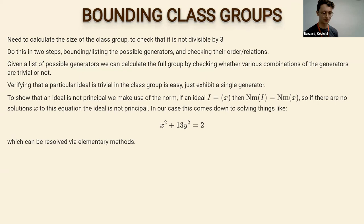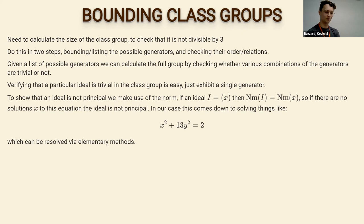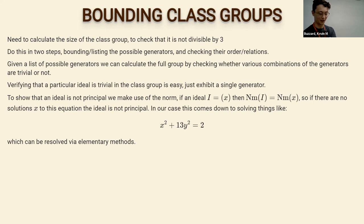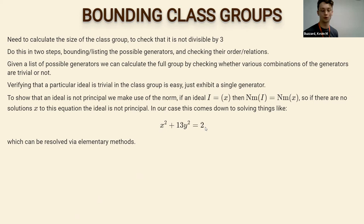An interesting mathematical question that came out of this project: how often does this trick work? How often does the Hasse principle give a proof of non-principality for ideals in your number field? I think there are many people studying related questions purely for mathematical interest — like Rachel Newton's work on arithmetic statistics and how often the Hasse principle fails for abelian number fields.